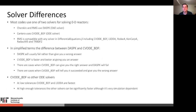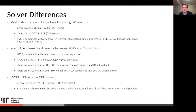Most codes use one of two solvers for 0D reactors. Chemkin and RMG's internal solver use DASSL, a DAE solver, and Cantera uses CVODE BDF. RMS is compatible with any solver in DifferentialEquations.jl, including CVODE BDF, LSODA, Rodas4, KenCarp4, Radau5, 2A5, and TRBDF2. DASSL will usually fail rather than give a wrong answer. CVODE BDF is faster and better at giving an answer, but there are cases where CVODE BDF will succeed and give the wrong answer. If absolute tolerance is low enough, CVODE BDF and LSODA are the fastest, but if tolerance is high enough, other solvers can be faster depending on the system.